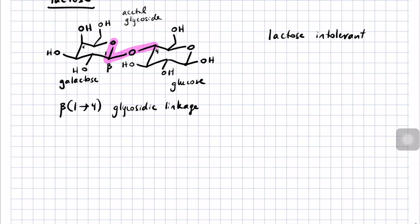It's thought that this mutation generated a selective advantage for people in the European area who were able to gain nutrition from dairy products. Cows had been domesticated around that time, and gaining nutrition from milk and cheese may have taken some of the risk of boom-bust crop cycles out of daily human existence. But there's a lot more to talk about there — let me mention just one more sugar before we're done.